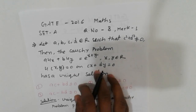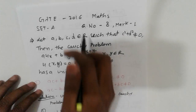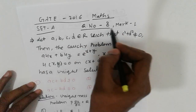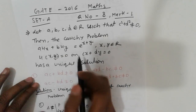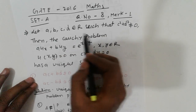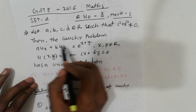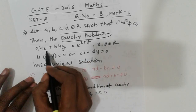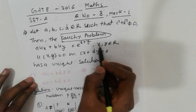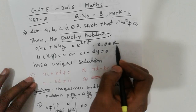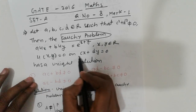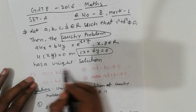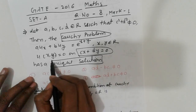Let's go to the problem. The problem is from GATE 2016 Mathematics, question number 8, one mark. Given a, b, c, d such that c squared plus d squared is not equal to zero, consider the Cauchy problem: a del u/del x + b del u/del y = e raised to x plus y, where (x, y) belongs to R, with u(x, y) equal to zero on the boundary condition c·x + d·y equal to zero.